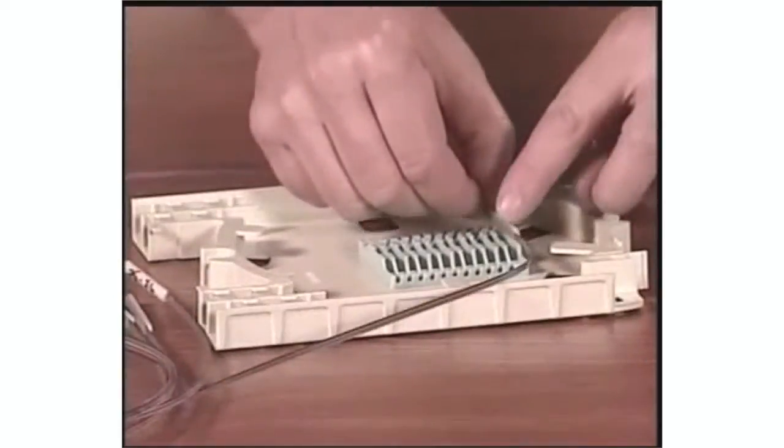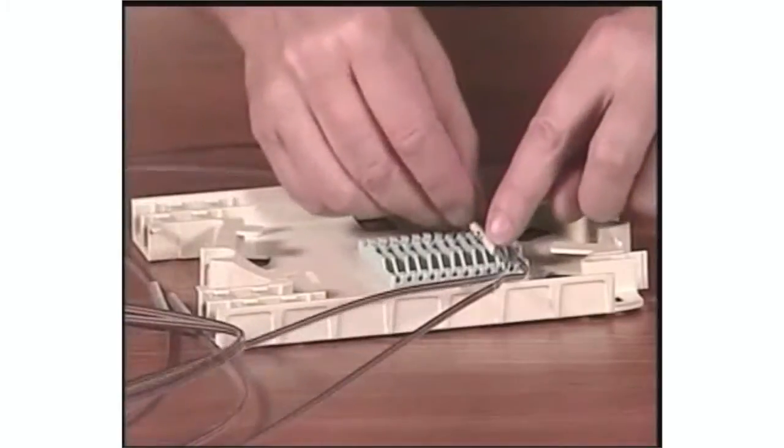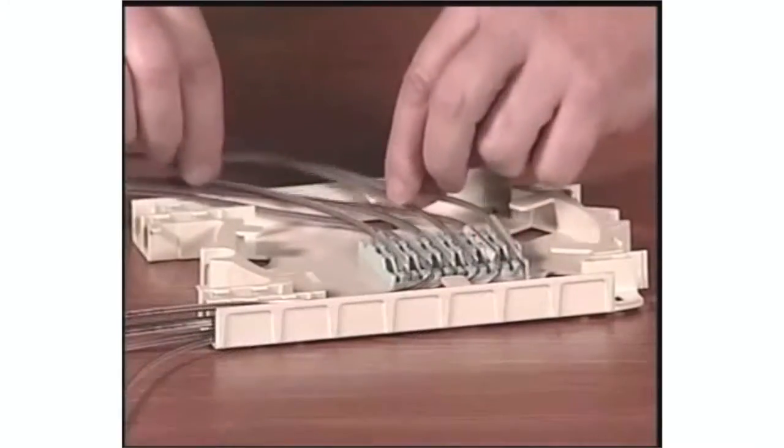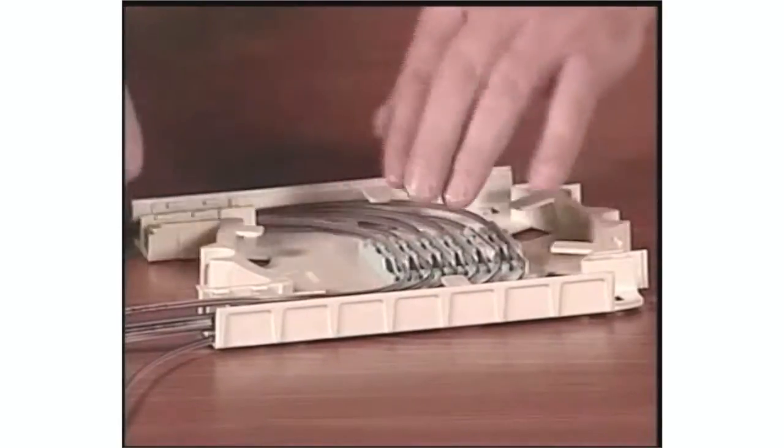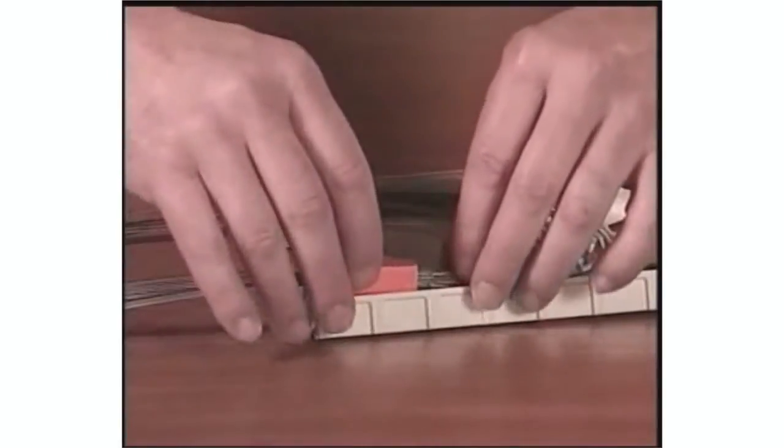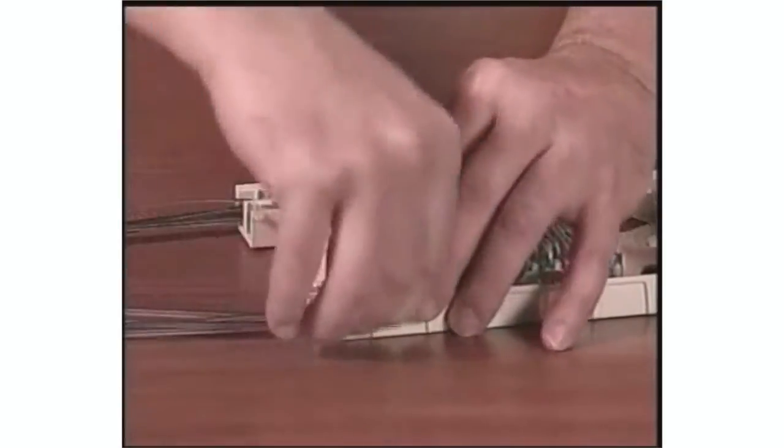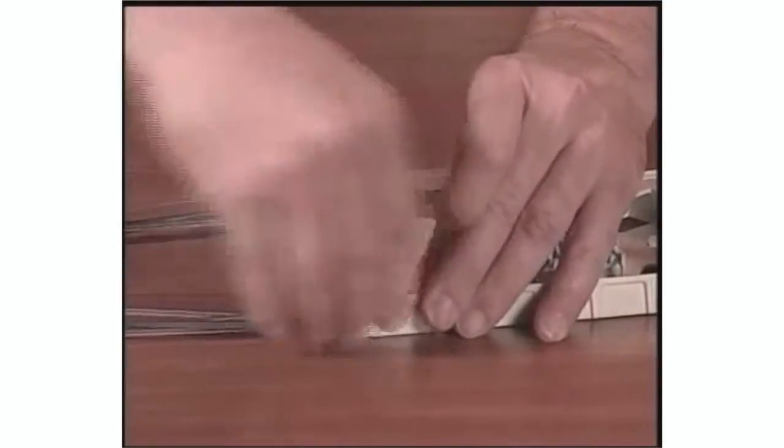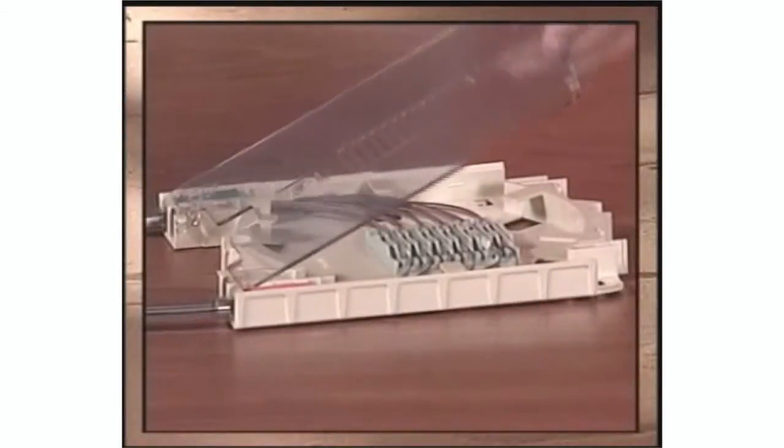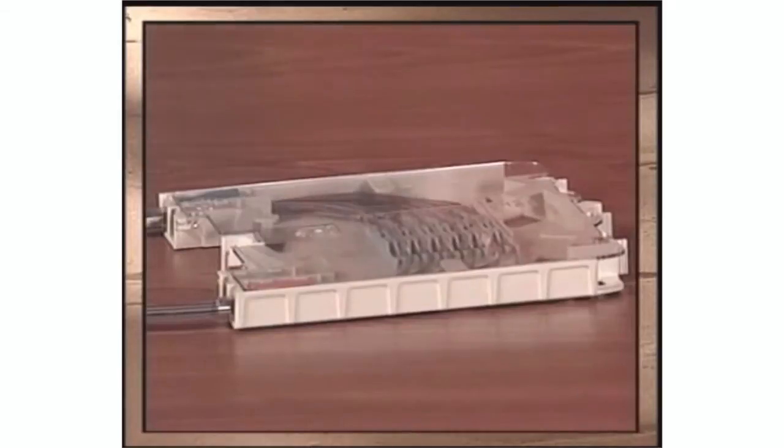Insert first splice into splice block. Install the remaining splices in numerical order. Organize ribbons below the tabs on each side of the splice tray. Slide each transport tube up to the splice tray. Insert each retention sleeve into the entry channel with the angle edge down.